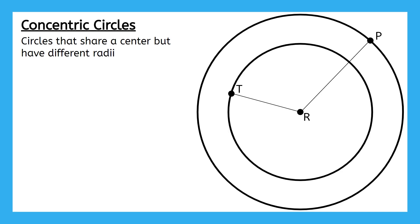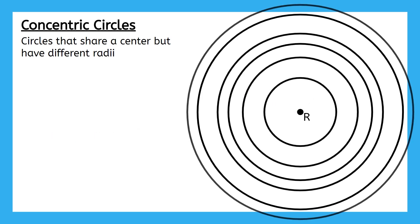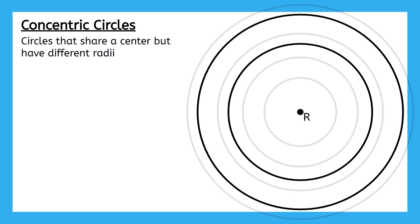We can name them based on their center and radius. So the bigger circle here can be called R with radius PR and the smaller circle can be called circle R with radius TR. There can be many concentric circles with the same center, so it's super important to have a way to differentiate between them.